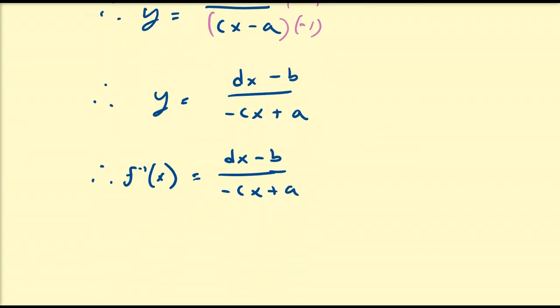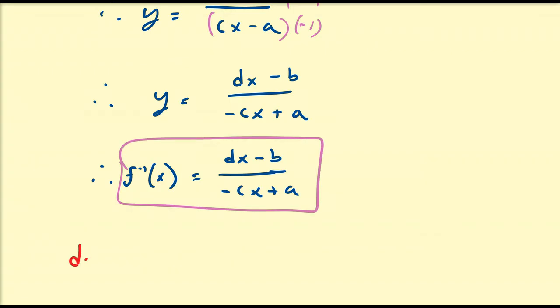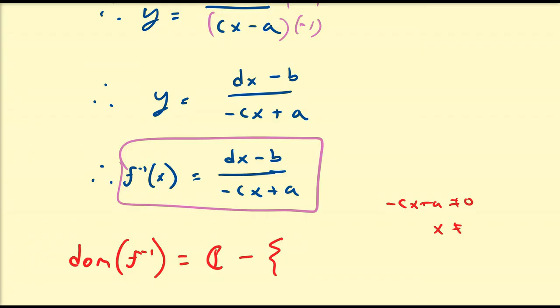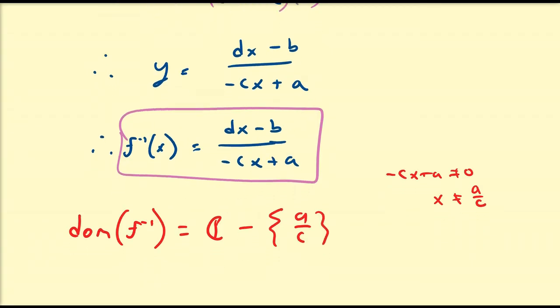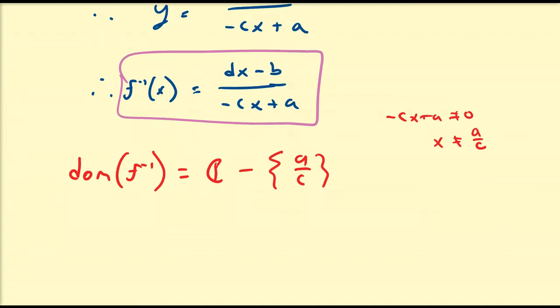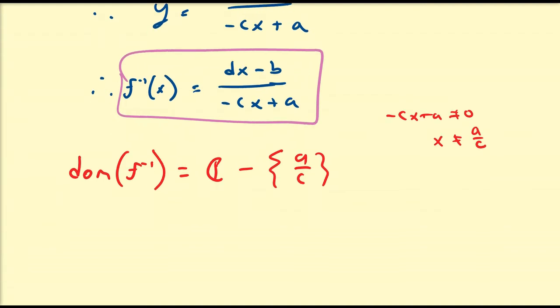Of course, we can find the domain of this inverse function. The domain of f inverse is going to be the set of all complex numbers except for the number where negative cx plus a equals zero, meaning x cannot equal a divided by c. So a over c is the number not in the domain of the inverse, which of course relates to the vertical and horizontal asymptotes of the original function.